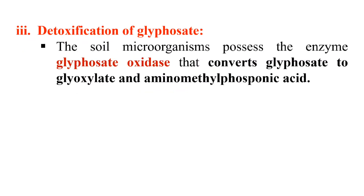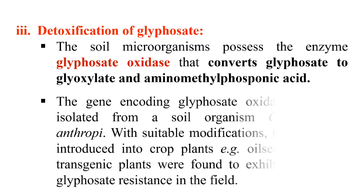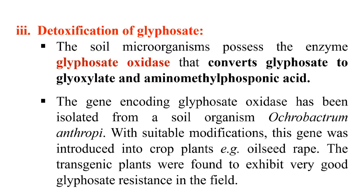The third strategy is the detoxification of glyphosphate. Some microorganisms possess an enzyme called glyphosphate oxidase, which converts glyphosphate into glyoxylate and aminomethylphosphonic acid, effectively neutralizing or detoxifying glyphosphate. We isolate the gene for this glyphosphate oxidase enzyme — generally taken from the soil organism Ochrobactrum anthropi — and with suitable modifications introduce this gene into our plants, making them resistant to glyphosphate.